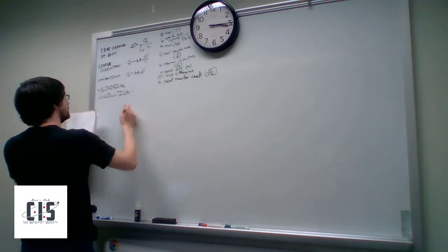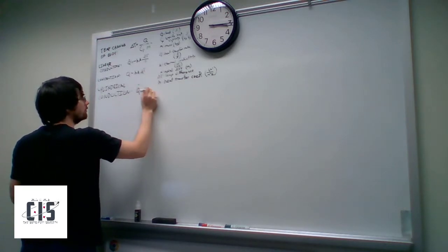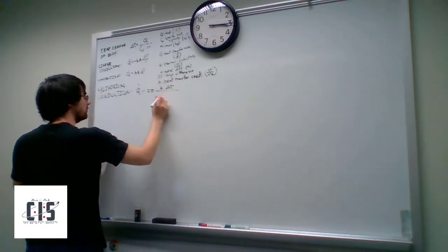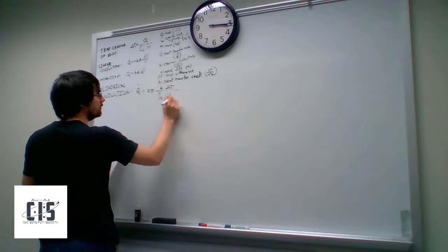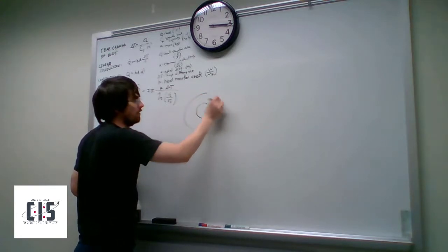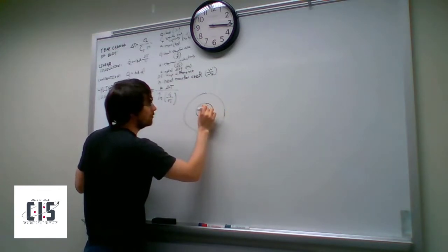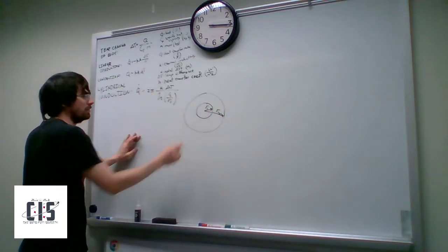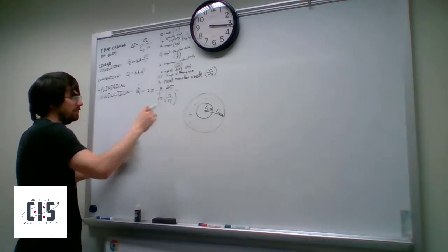For cylindrical conduction, Q-dot ends up being 2π times k times the temperature difference divided by the natural log of R2 over R1. So if you have a pipe and you know the inside and outside surface temperatures, along with R1, R2, and the thermal conductivity of the material, that's how you'd calculate the heat coming out.